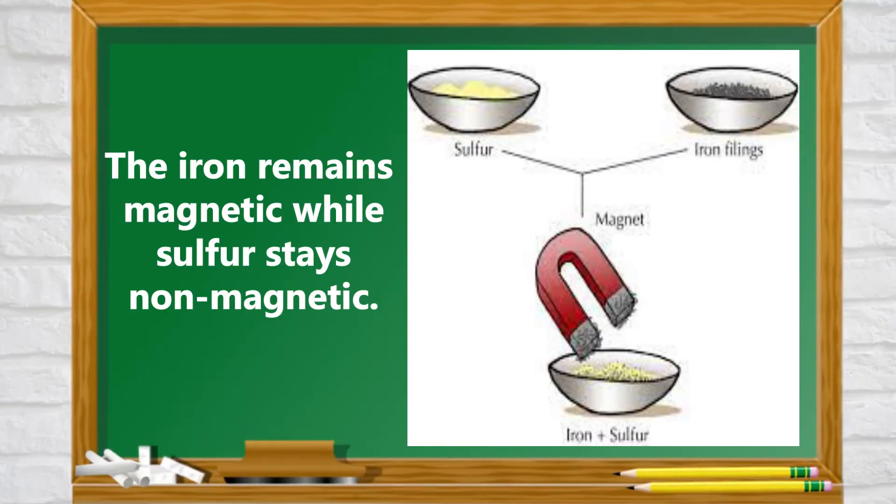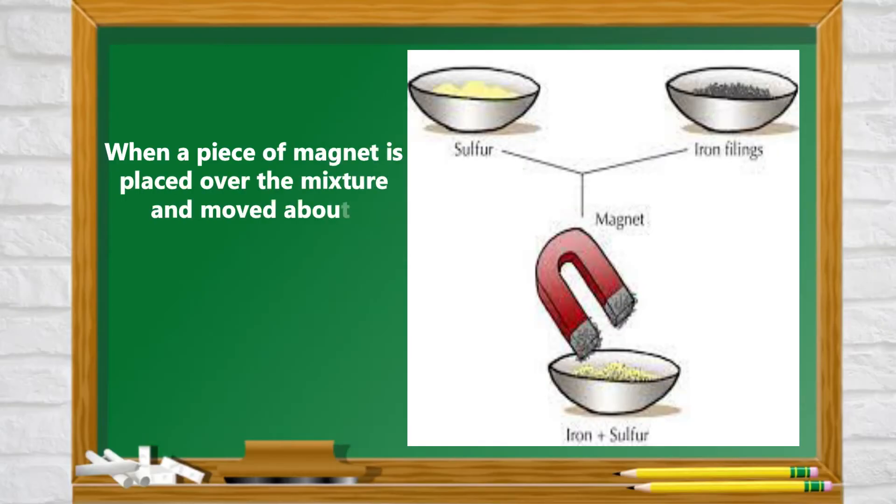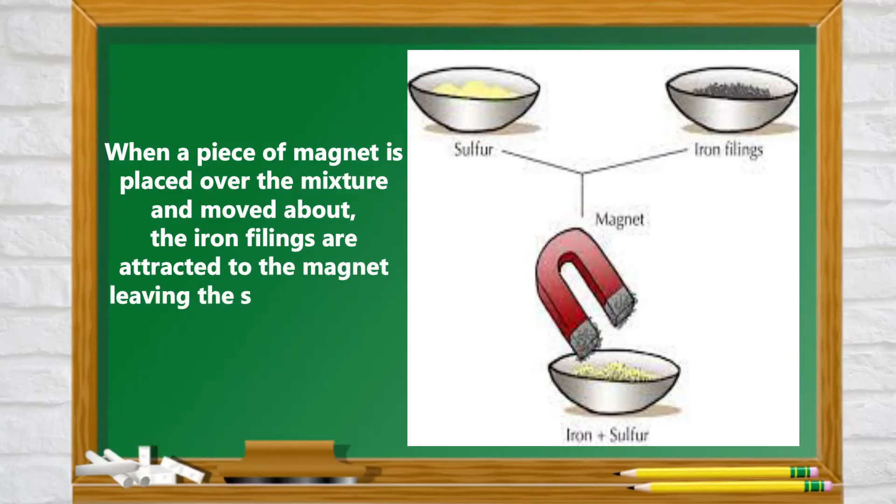Looking at the mixture, it is visible that the dark brown iron speckles the yellow powder. When a piece of magnet is placed over the mixture and moved about, the iron filings are attracted to the magnet, leaving the sulfur powder on the dish.